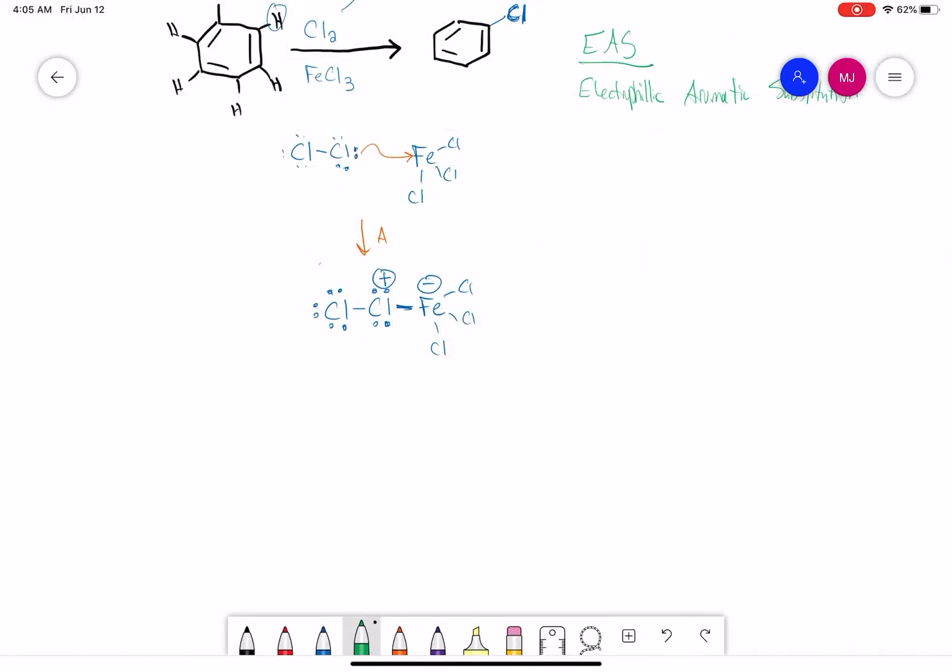So we can think of this sort of as our EA. If you'd like, this is sort of optional, you can show that the chlorine-chlorine bond breaks to generate a Cl plus.